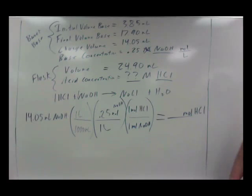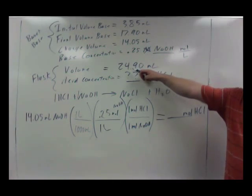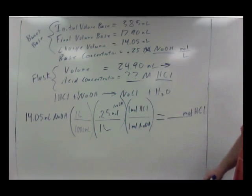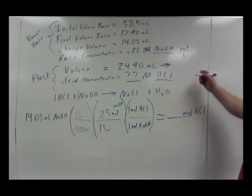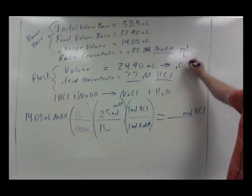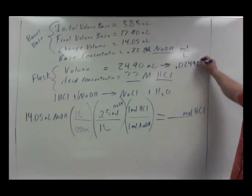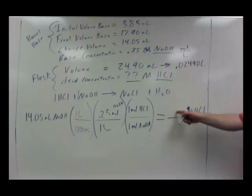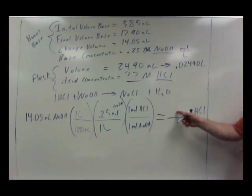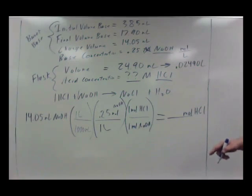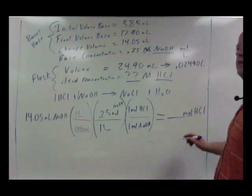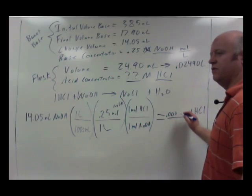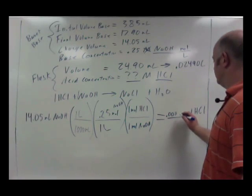And we know our volume, right? Okay, so let's convert our volume to liters. So 24.90 milliliters is how many liters? 0.02490 liters. So that's our moles. Do we have that number yet? What is 14.05 times? What's that, point zero zero three five? Is that rounded off? Yes, that's one two five.